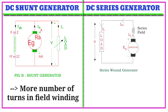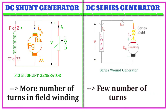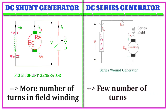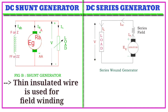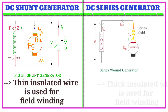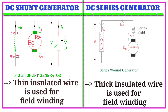Second point: a more number of turns in the field winding for the shunt generator, whereas a few number of turns for the series generator. Third point: thin insulated wire is used for the shunt field winding, whereas thick insulated wire is used for the series field winding.